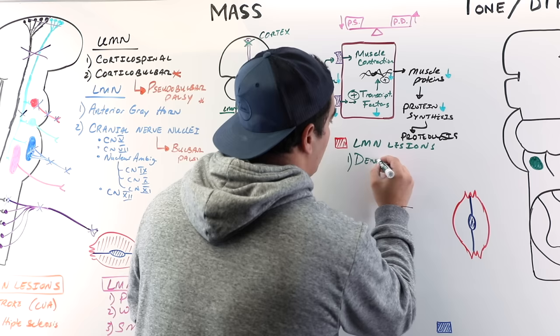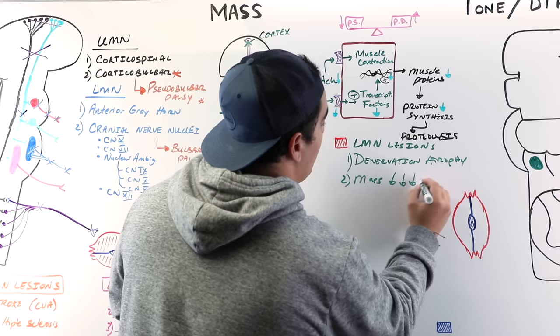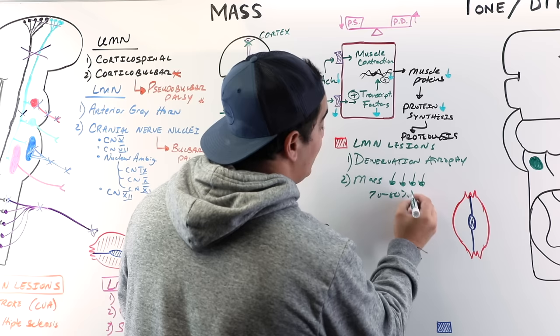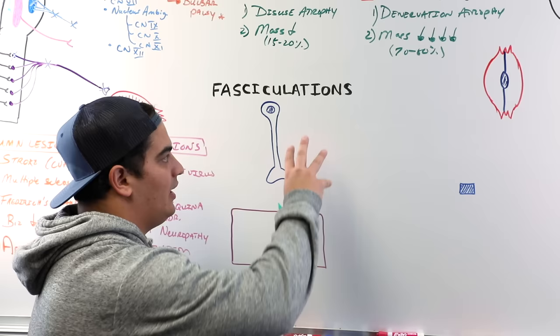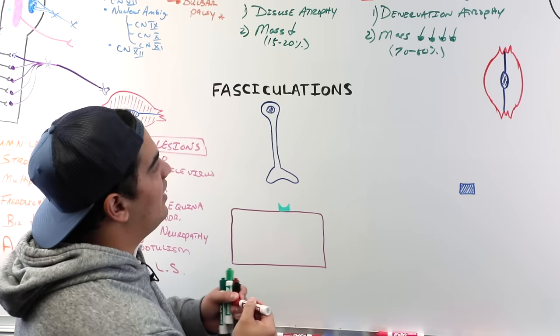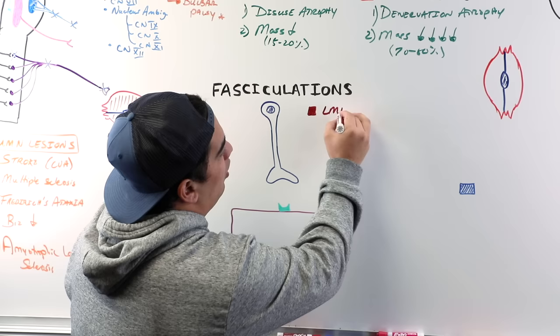So to summarize muscle mass: upper motor neuron lesions cause disuse atrophy — a minimal 15 to 20 percent decrease — while lower motor neuron lesions cause denervation atrophy — a severe 70 to 80 percent decrease. Now let's talk about fasciculations, which are only seen with lower motor neuron lesions.